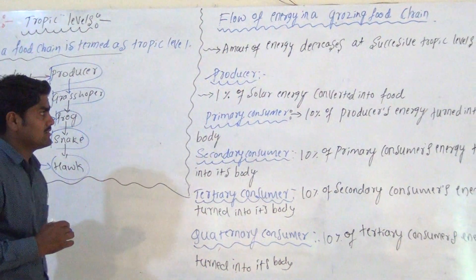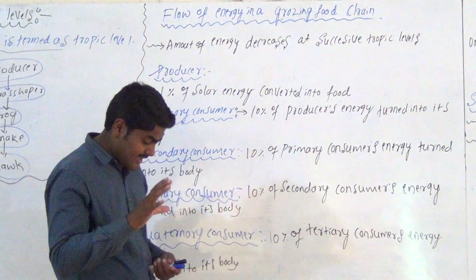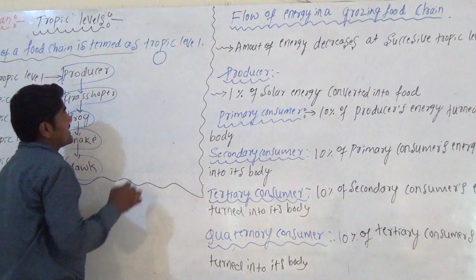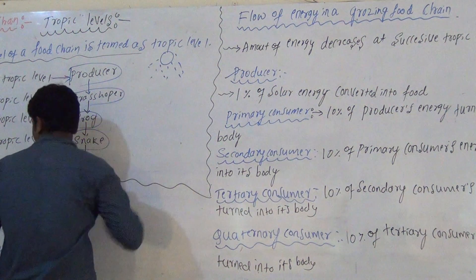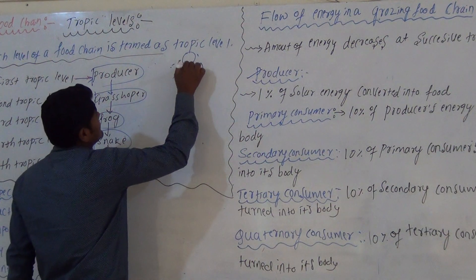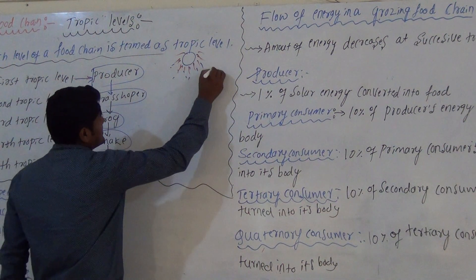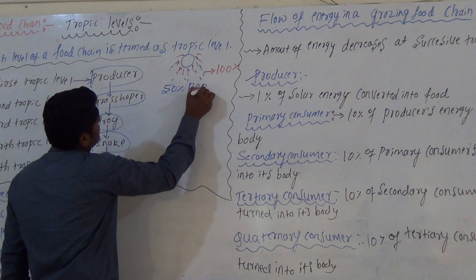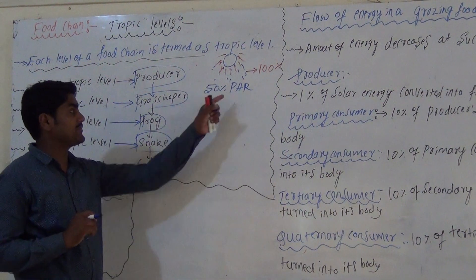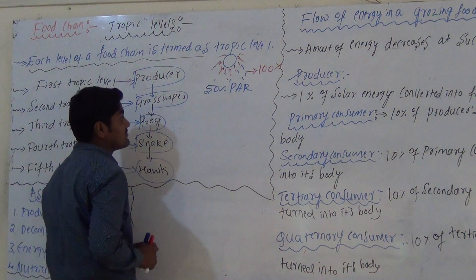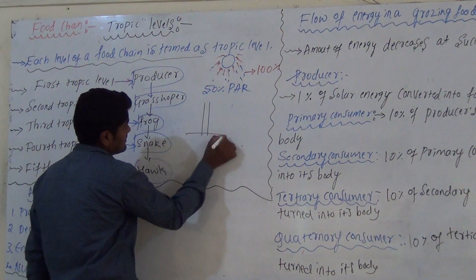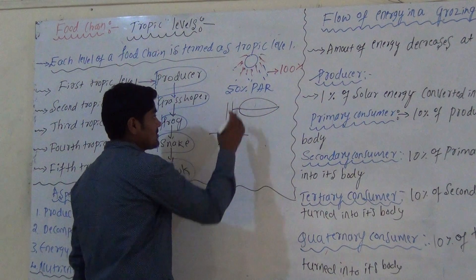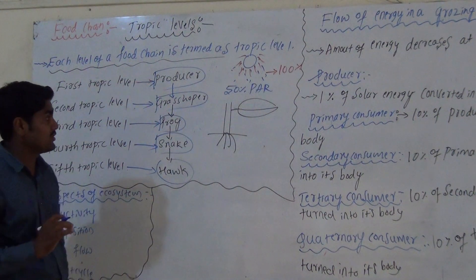The producer receives 100% solar radiation from the sun. Out of this, 50% is PAR — that means Photosynthetically Active Radiation. Plants use this Photosynthetically Active Radiation.